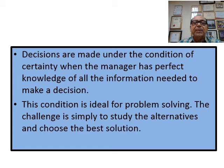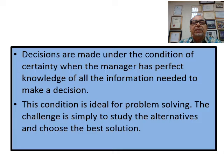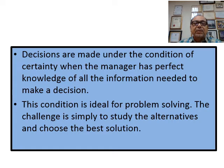Under the condition of certainty, the manager has perfect knowledge of all information needed to make a decision. For example, if you want to cook a special dish and you need 10 ingredients and you have all 10, you can make a very good decision on how to cook and how the food will taste. When all the ingredients for a decision are certain, the decision can be implemented easily with no uncertainty.